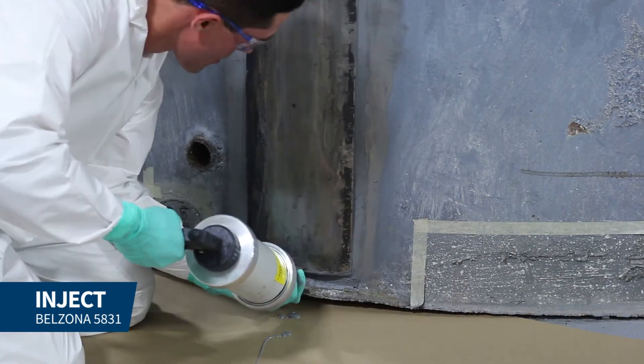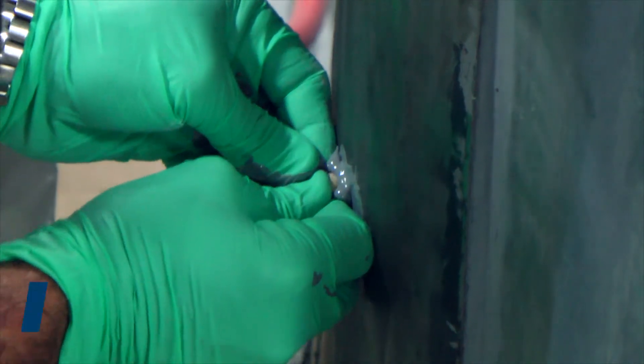Once we reached the vent ports while injecting Belzona 5831, they were sealed with caulks.